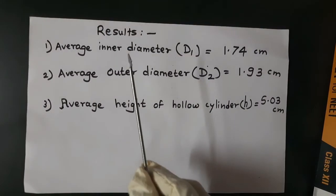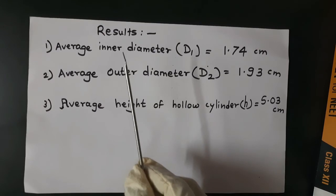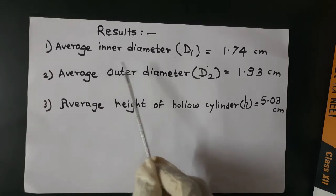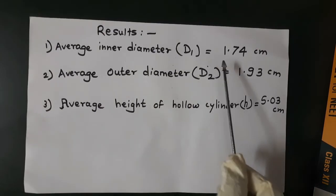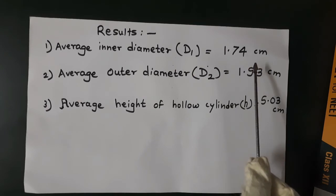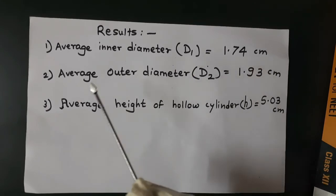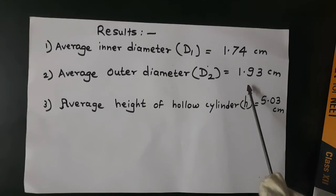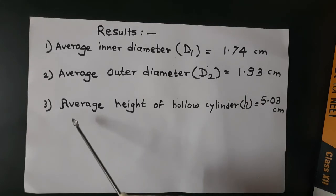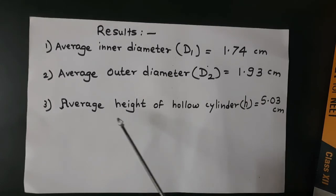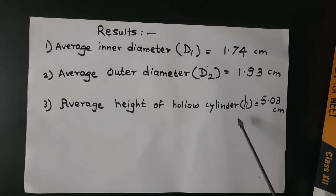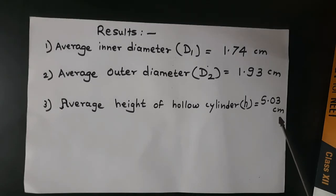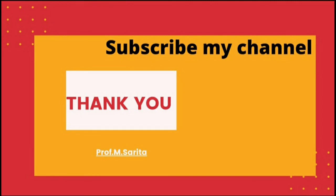Finally, we get these results: average inner diameter D1 is equal to 1.74 centimeter, average outer diameter D2 is equal to 1.93 centimeter, and average height of the hollow cylinder H is equal to 5.03 centimeter. Thank you.